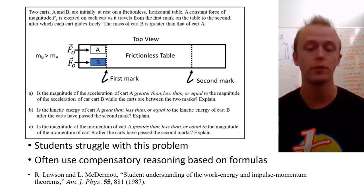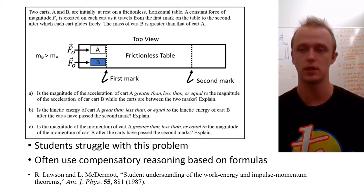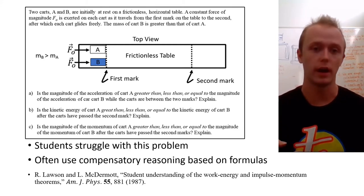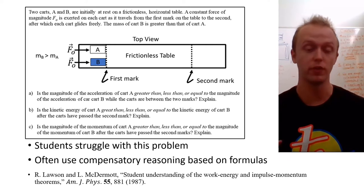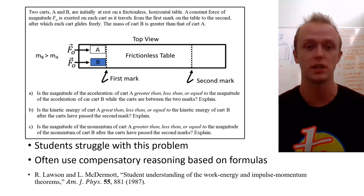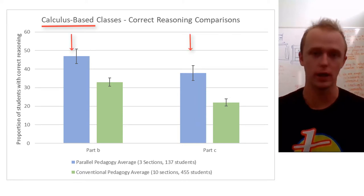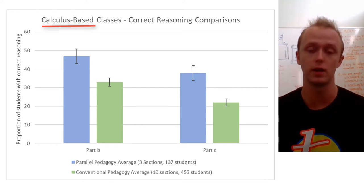Students who got this wrong often would write out the formula for kinetic energy or momentum and try to use compensatory reasoning to explain what the answer is, such as one cart has a higher velocity, and velocity is squared in the kinetic energy formula. So that cart must have greater kinetic energy. So as you can see on these graphs, the students in the parallel pedagogy classes performed significantly better than the conventional pedagogy students on both parts B and C.